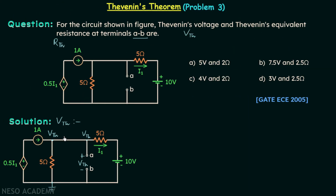Now we will use nodal analysis to find voltage Vth. This is our reference node and this is our principal node. We assume all currents in the branches leave this particular node — let this current be I1, this current be I2, and this current be I3. From KCL, I1 plus I2 plus I3 equals zero.